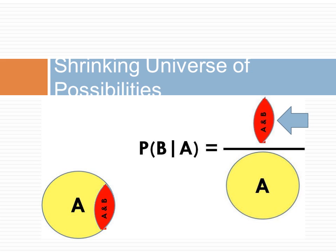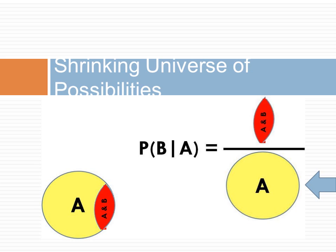To calculate the probability of B given A has occurred, we start with the number of times B occurs in the reduced sample space. Since the universe of possible events are just events where A has occurred, this is the red area where B and A co-occur. We divide the red area by the number of all possible events — since the only thing possible is A, this is given by the yellow circle of A. We are calculating the probability as the ratio of occurrence of the event by the possible events, but now event A has occurred and the universe has shrunk. This notion of a shrinking universe of possibilities is important in giving intuition about the meaning of conditional probabilities.